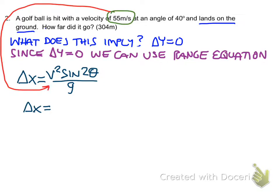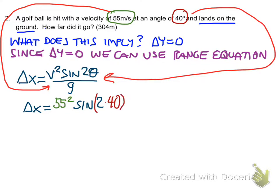So in this case my v squared is 55 and then I have sine twice my 40 degrees. And on earth g is 9.8, so we divide by 9.8.